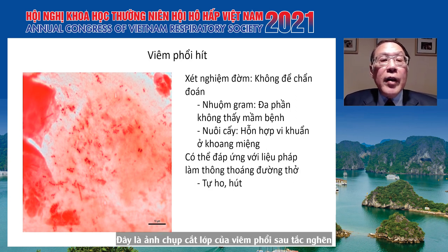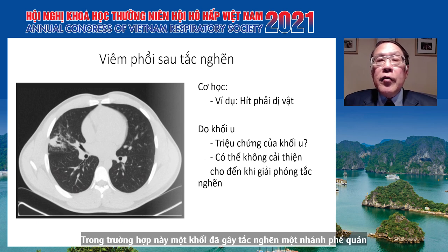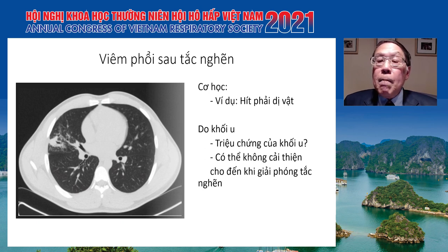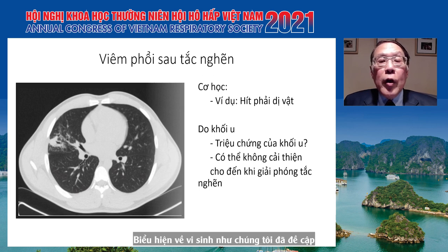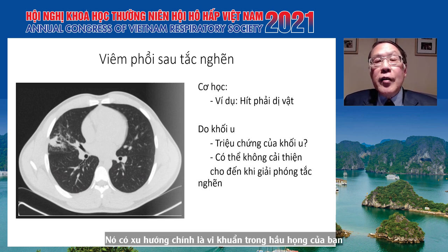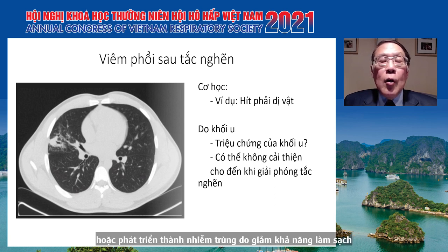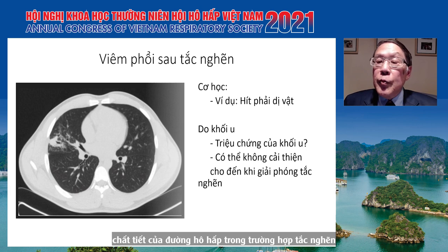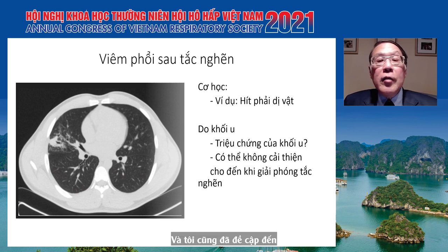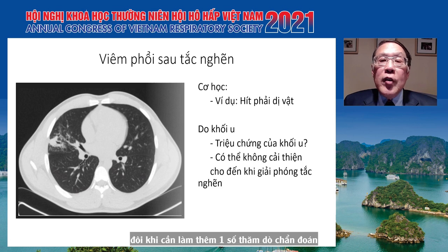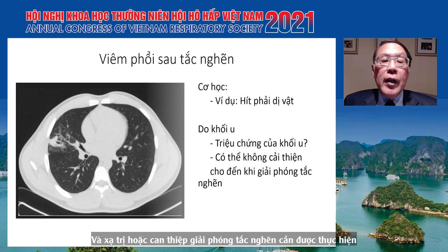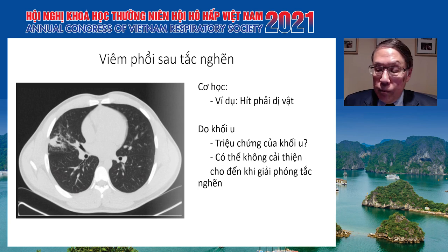This CT scan shows a post-obstructive pneumonia with a mass obstructing one of the bronchi. The presentation and organisms may be similar for both aspiration and post-obstructive pneumonia, as it tends to be oropharyngeal flora that gets into the lungs either by aspiration or develops into infection due to inability to clear respiratory secretions in the case of obstruction. Sometimes a procedure is required for diagnosis, and radiation therapy or a procedure to relieve the obstruction may be necessary to affect recovery.